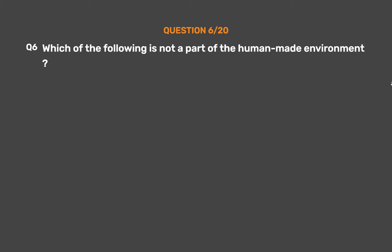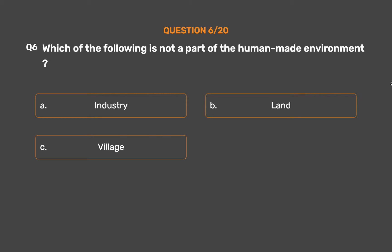Question No. 6. Which of the following is not a part of the human-made environment? Option A: Industry. Option B: Land. Option C: Village. Option D: Transport.